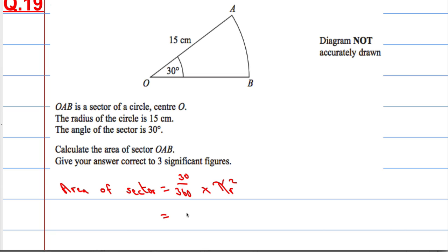You don't have to cancel it down, but I'm going to do so just to make life a bit easier. It's 1 over 12, one-twelfth of a circle, times π times 15 squared.